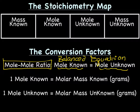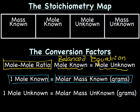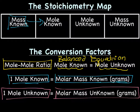The next possible equality we could use is: one mole known equals the molar mass of the known, with molar mass in grams, obtained from the average atomic mass on the periodic table. This is used when going from mass known to mole known. The third equality is one mole unknown equals the molar mass unknown in grams, used when going from mole unknown to mass unknown.